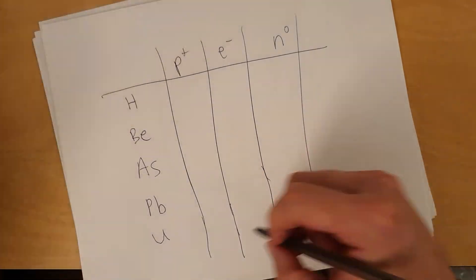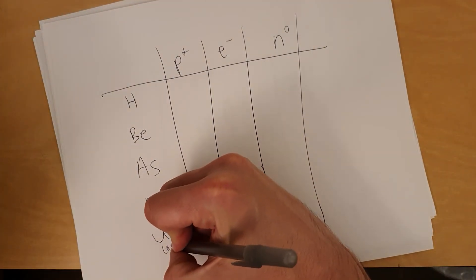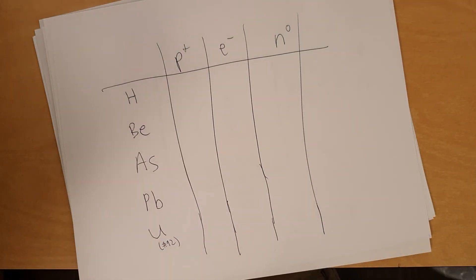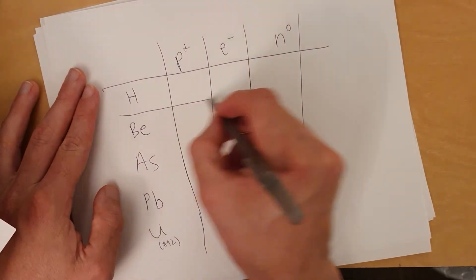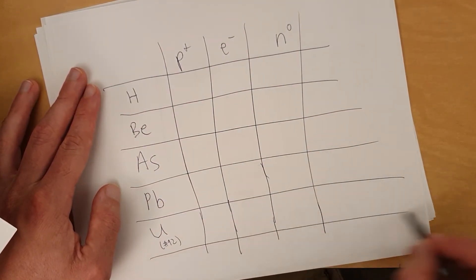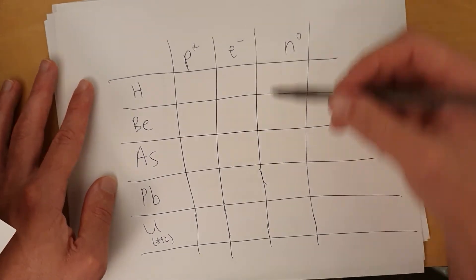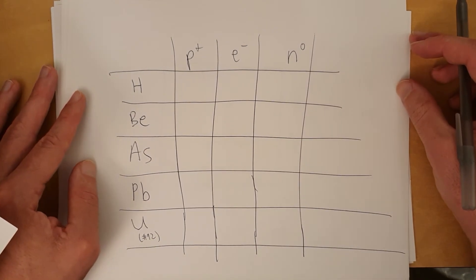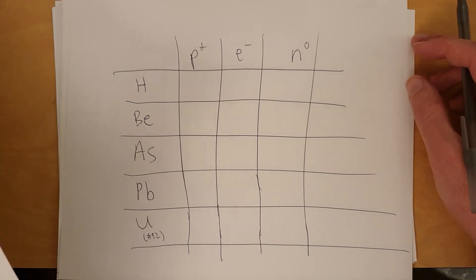Just in case you're having a hard time finding that, it's number 92 on the periodic table. The rest of these, you should be able to find them. Just scan through and look. Go ahead and give them a shot. Pause the video now, see if you can figure it out. I'm going to go through the answers and explain each one.